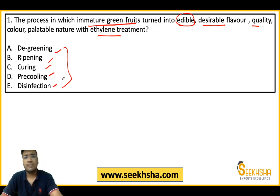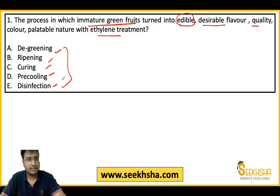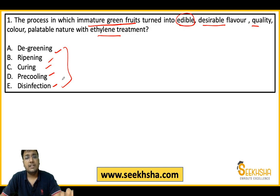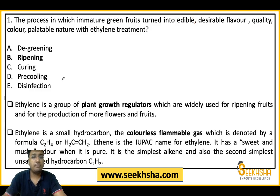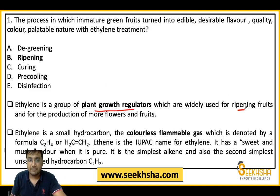According to me, this is not a difficult question at all. You cannot say this is a tricky question. Agriculture students are expected to know this answer. It's a very easy question and can be solved very easily. The right answer is Option B: ripening.